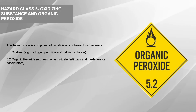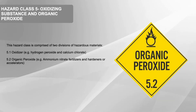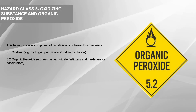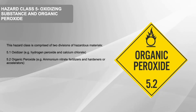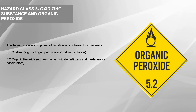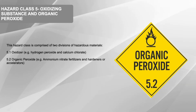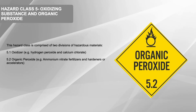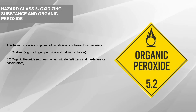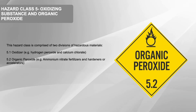Hazard Class 5: Oxidizing Substance and Organic Peroxide. This hazard class is comprised of two divisions of hazardous materials. 5.1 Oxidizer — Example: Hydrogen Peroxide and Calcium Chlorate. 5.2 Organic Peroxide — Example: Ammonium Nitrate Fertilizers and Hardeners or Accelerators.